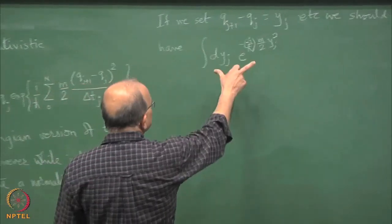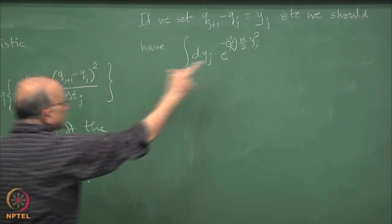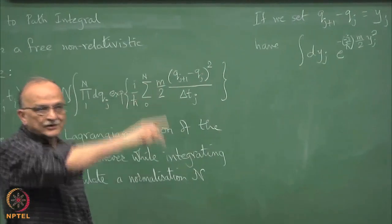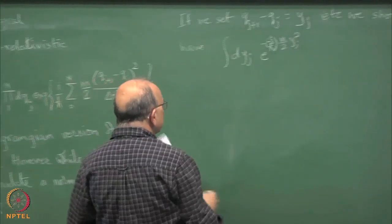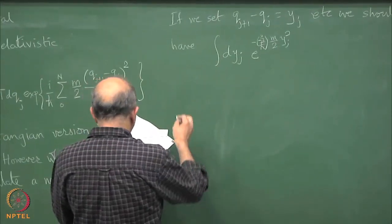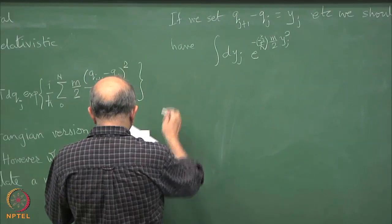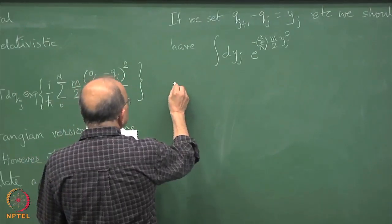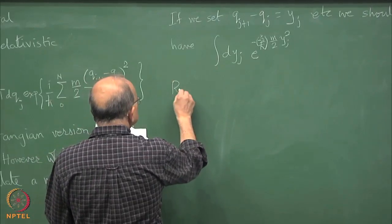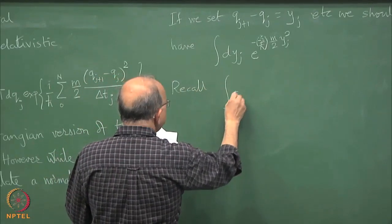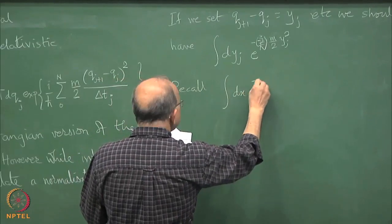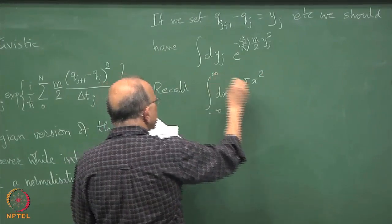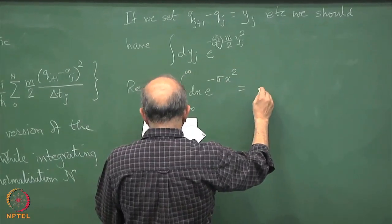So if we do this Gaussian integral, what answer do we get? Let us do this right — we agree that is what will come out; we just have a product of lots of these. So let us do this elementary Gaussian. Recall that we have e raised to... square root of π over σ.